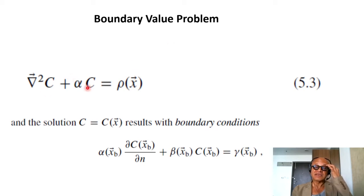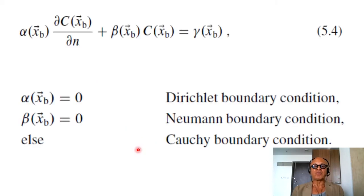So boundary value problem in steady state: grad squared c plus alpha c equal to rho, and the solution c as a function of x results with boundary conditions alpha xb times dc xb dn plus beta xb cxb equal to gamma xb, where alpha, beta, and gamma are functions of any point on the boundary, and these gradients fluxes at the boundary perpendicular to the boundary need to be prescribed when you have a system like this as a boundary value problem.